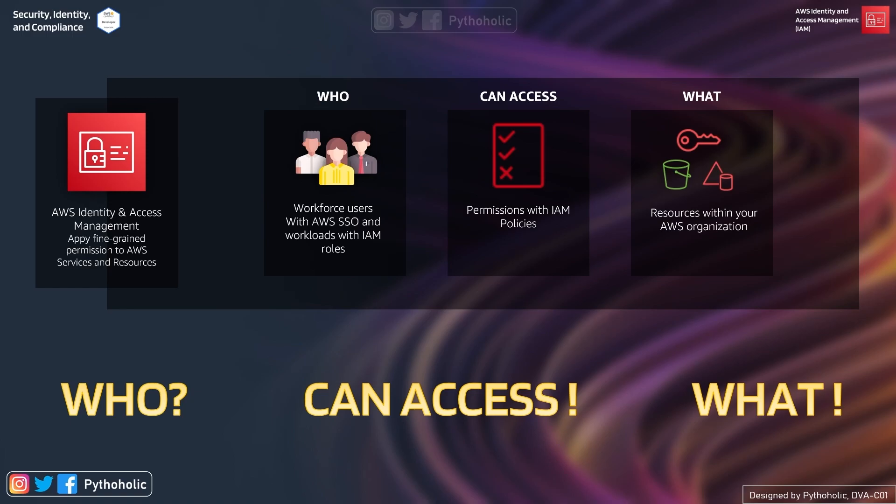The 'who' is going to be the workforce user with AWS SSO — single sign-on — and the workloads with IAM roles. That's where you define the policies — the 'can access' part — which provides permissions defined in your IAM policies. And the 'what' is your resources within your AWS organization.